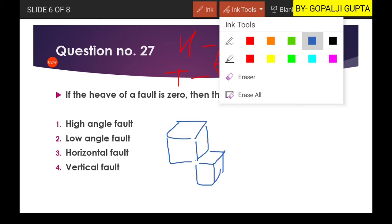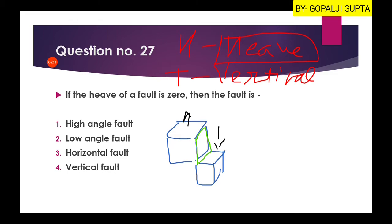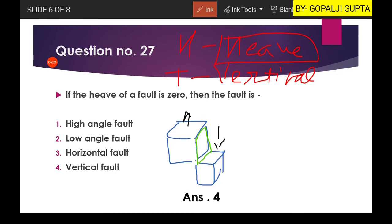So this is the condition of your faulting where fault plane is this, and the movement is something like this. This block is going downward and this block is going upward. So you can see there is only vertical movement. That means heave is zero and this is known as vertical fault because fault plane is vertical. That's why the fourth option will be your right answer. Now you have to tell me what will be the name of that fault where throw is zero - where only horizontal movement is there. Write down in the comment box.